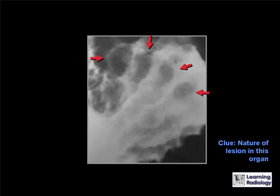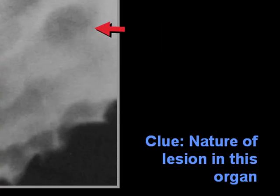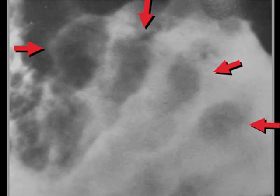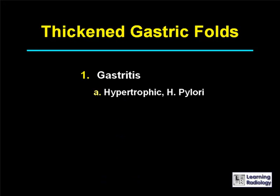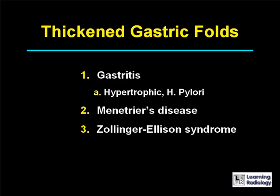The next differential diagnosis is for thickened gastric folds. There are five main causes: gastritis (hypertrophic or H. pylori), Ménétrier's disease, Zollinger-Ellison syndrome, varices, and lymphoma.